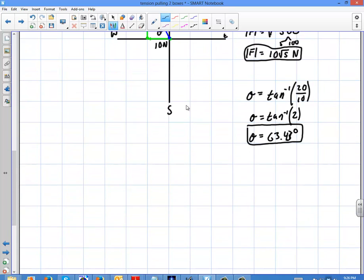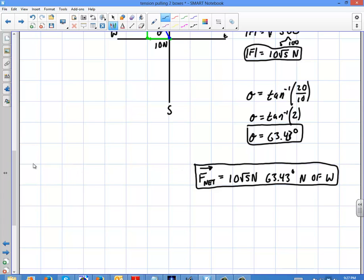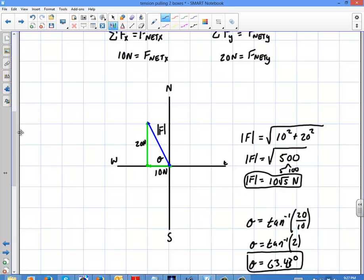So when I go ahead and write that out as the actual force here, I'm going to say the force net is going to be 10 root 5 newtons, 63.43 degrees north of west. And that's your net force, the complete version of it. And that's the direction that that boat is going to feel the pull, the net force that it's going to feel in that direction.